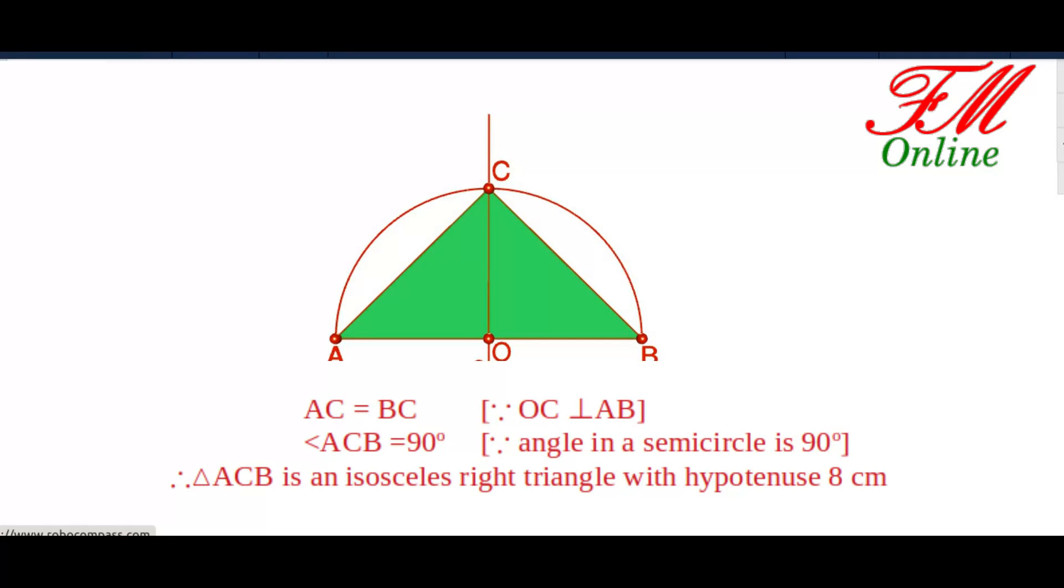So we have triangle ACB is an isosceles right-angled triangle.